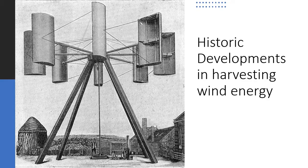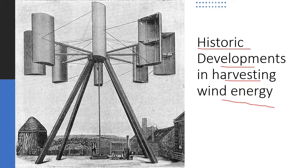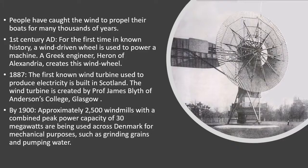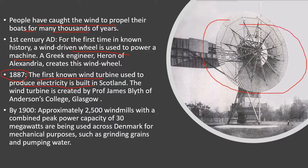We have seen the working of a wind turbine, the Betz limit, and horizontal and vertical axis wind turbines. In this section we are going to see the historical developments in harvesting wind energy. People have been using wind energy for a long time — before thousands of years people caught wind to propel their boats. In the 1st century AD, the first wind wheel was used to power a machine. The first known wind turbine used to produce electricity was built in Scotland in 1887.